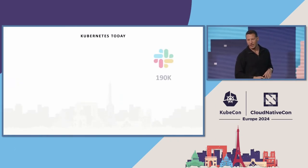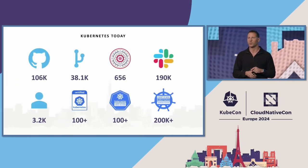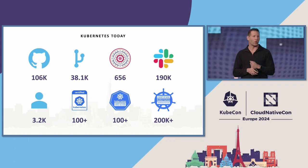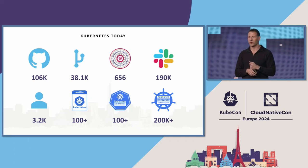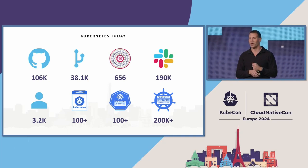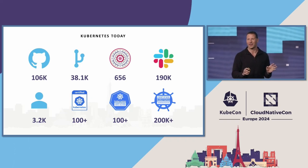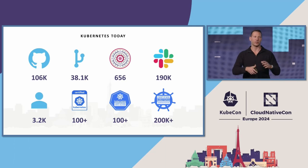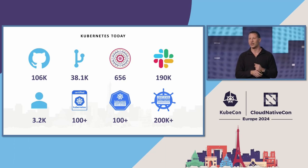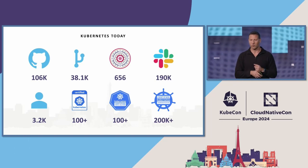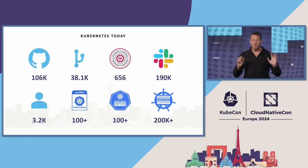Kubernetes today is truly one of the most active and largest open source projects out there, behind Linux. We have 38 releases — 656, I think — and one of the largest Slacks in the world with nearly 200,000 people on the Kubernetes Slack. Special thank you to all the Slack admins, both emeritus and current folks, who keep that place welcoming, inclusive, and functional. We have tons of certified Kubernetes distributions and service providers supporting companies adopting Kubernetes all over the world, and over 200,000 certified Kubernetes administrators. It's a truly massive project.